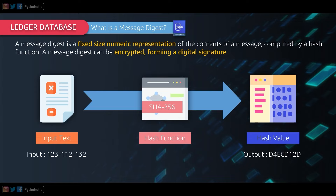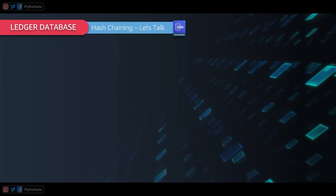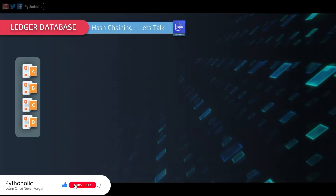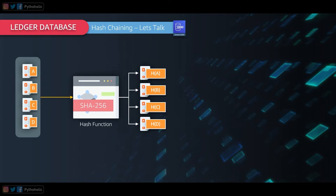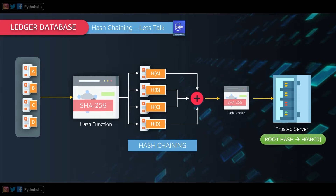Now let's understand how we verify data integrity using Merkle proofs. Hash chaining is used for cryptographic verification of data integrity. Suppose our data has a sequence A, B, C, D. Using hashing, we create H(A), H(B), H(C), and H(D). To keep it secure, we create a root hash by combining all these hash values. We combine them using the hash function and store the root hash H(ABCD) on our trusted server.